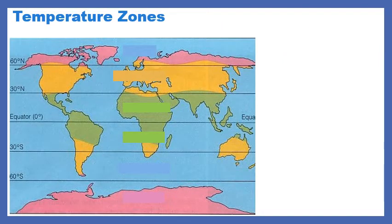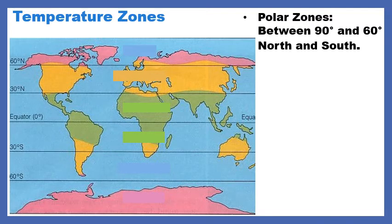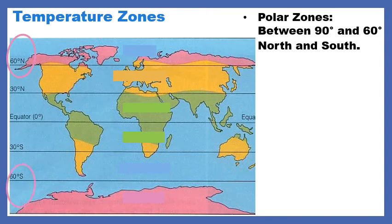Let's look at our temperature zones. We're going to start with polar zones. These are between 90 degrees north and 60 degrees north, and also 90 degrees and 60 degrees south. If that's a little confusing, let's look at the map. North is going to be north of the equator — that's going to be like the North Pole. South of the equator is going to be like where Antarctica is. We call these regions the polar zones.